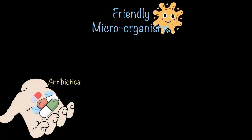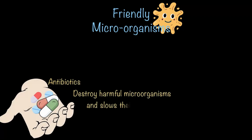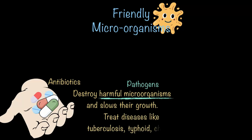Did you know that microorganisms are also behind the production of antibiotics? These life-saving medicines destroy harmful microorganisms and slow their growth. Such harmful microorganisms are called pathogens, which you will study later. Antibiotics treat diseases like tuberculosis, typhoid, and cholera by destroying the microorganisms behind these diseases and slowing their growth inside our body.